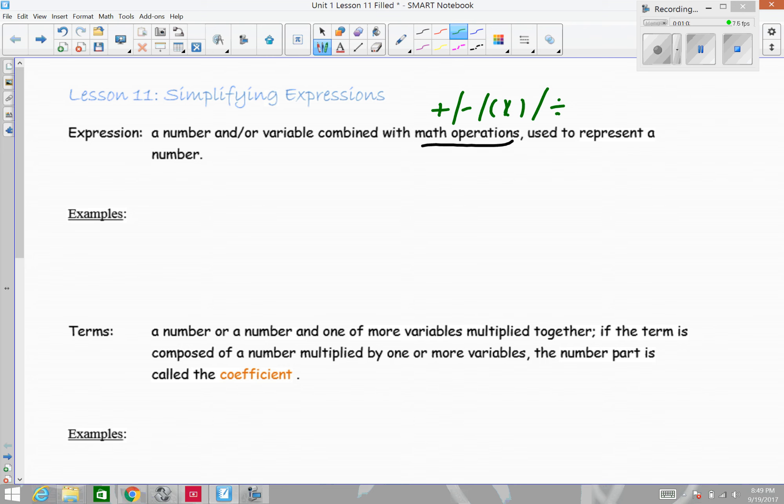For example, if I combine the number negative 7 with y, I'm combining them through multiplication. Or if I have an expression x plus 7, I'm combining a variable x with a number 7, and I'm combining them through the operation of addition.